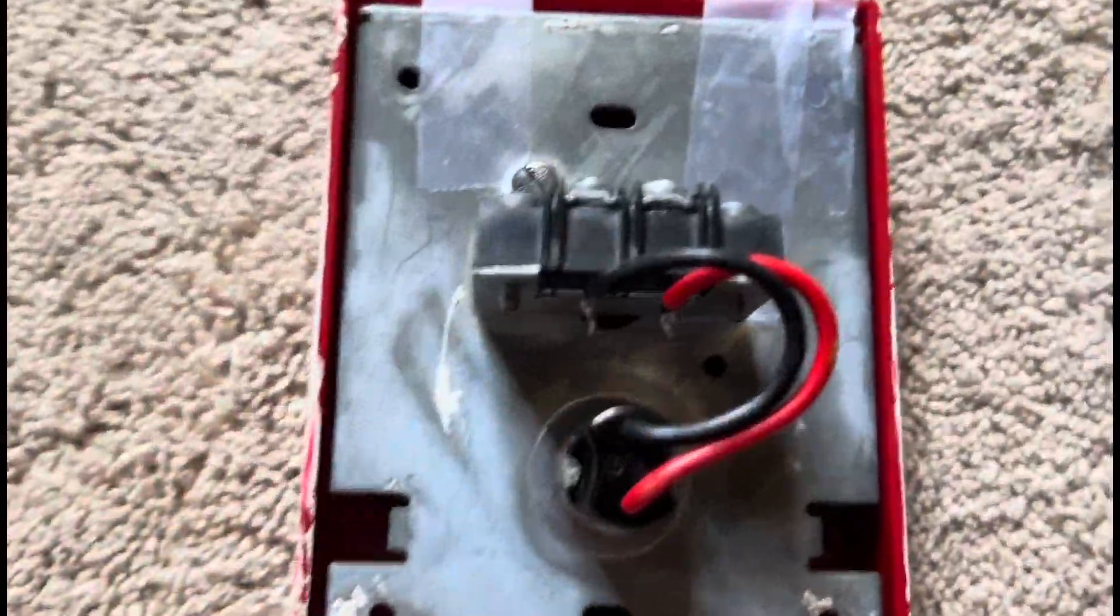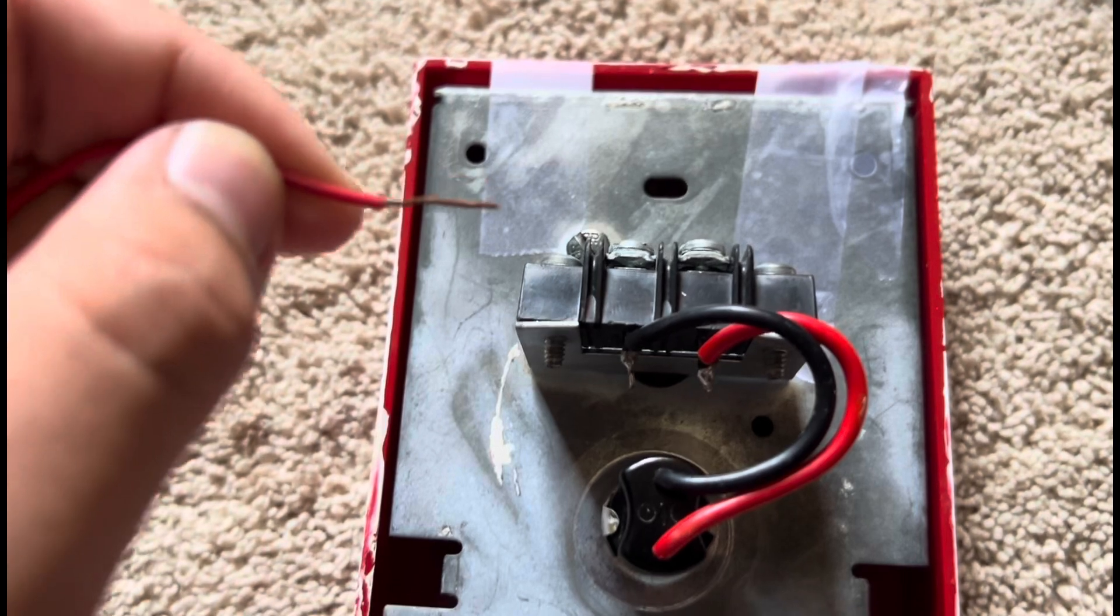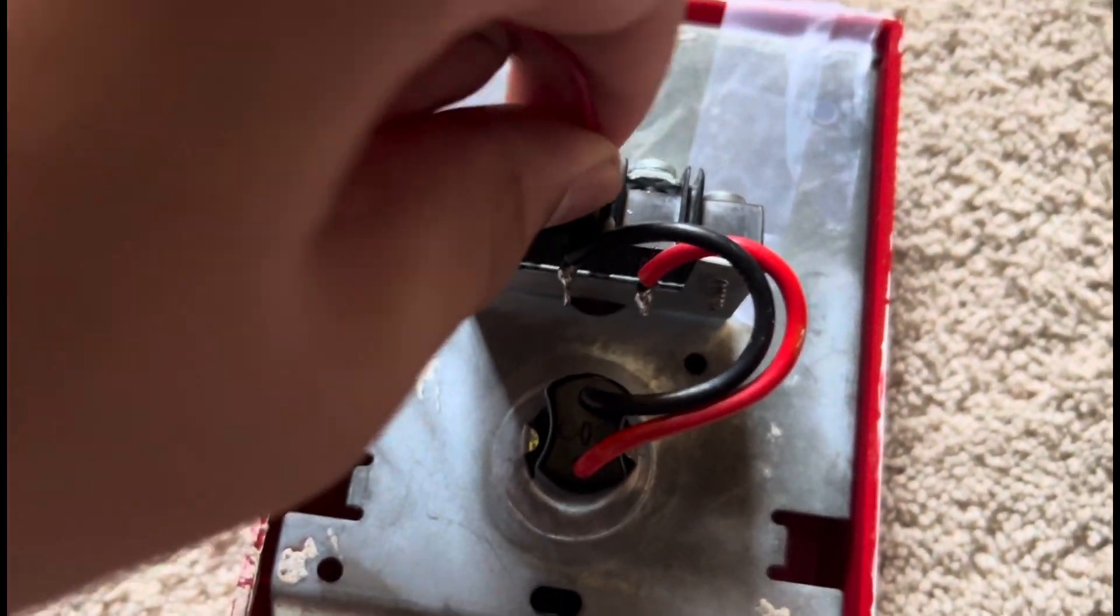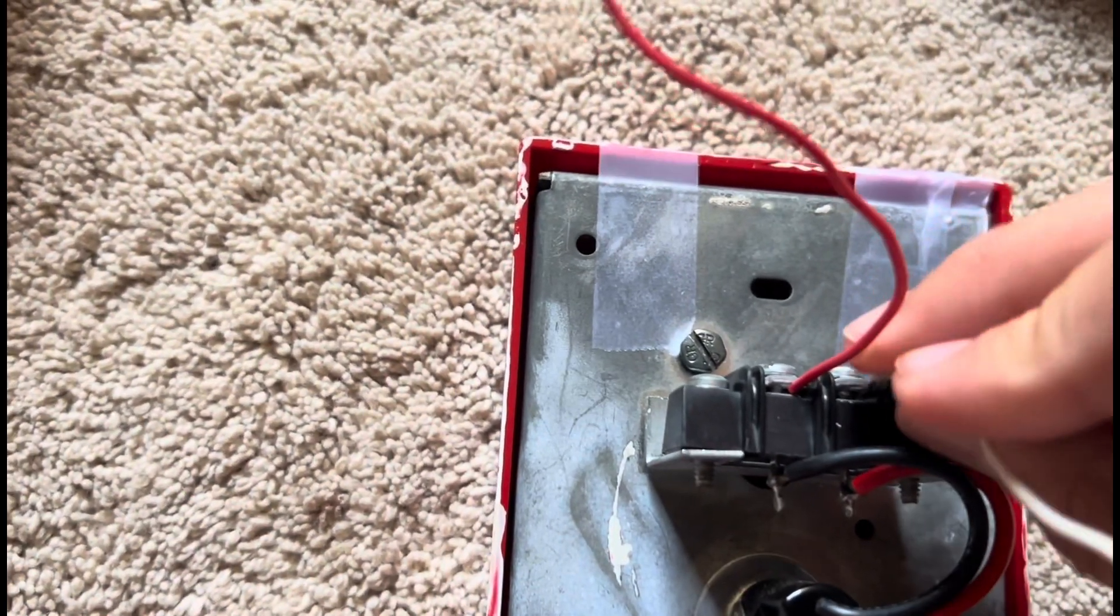Now you're going to take your pull station and take your bell wire or whatever kind of wire you used, and put it in whatever terminal you want. Then take your other wire and put it in the other terminal.